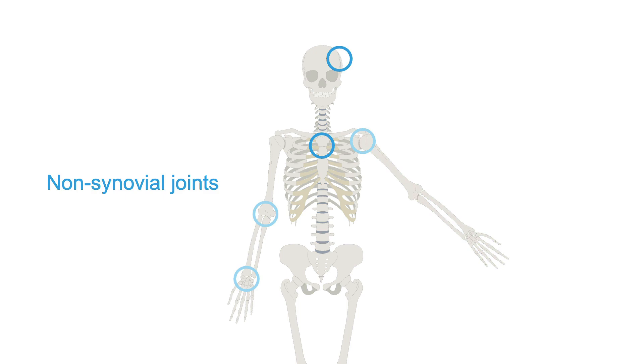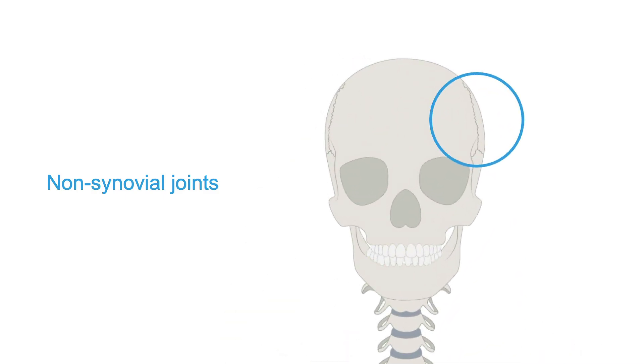Let's compare that with non-synovial joints, for example, the ones in the skull. These types of joints do not allow any movement and are not usually affected by arthritis.